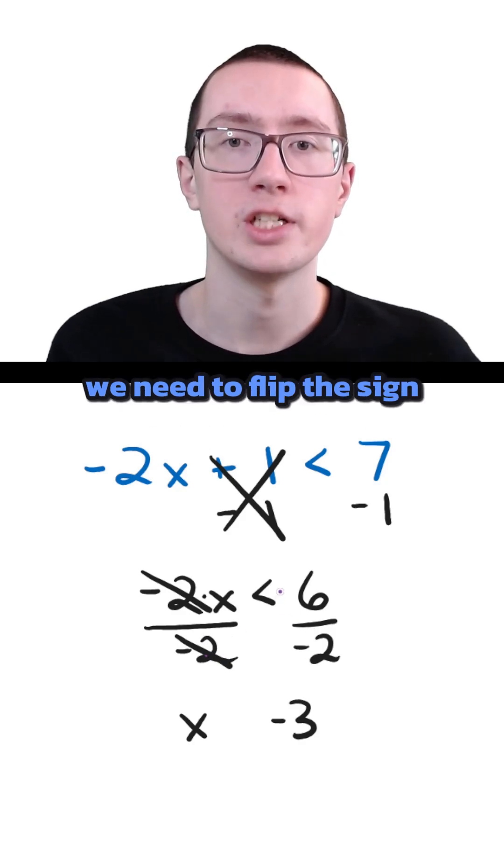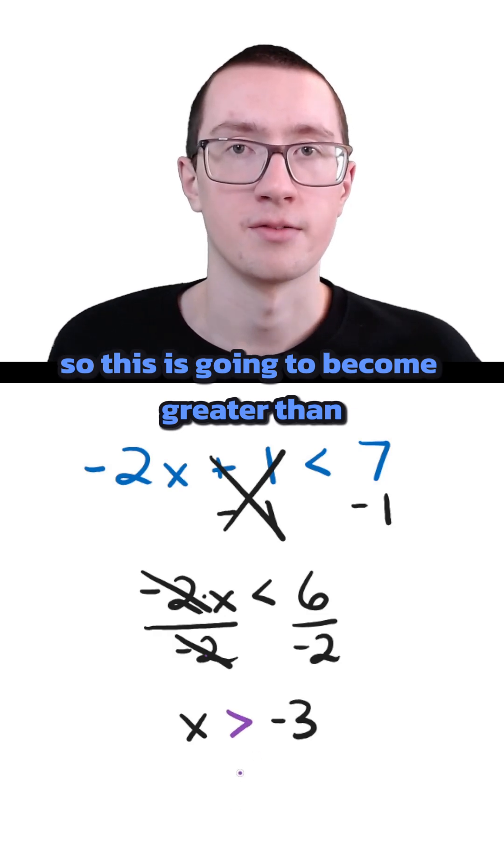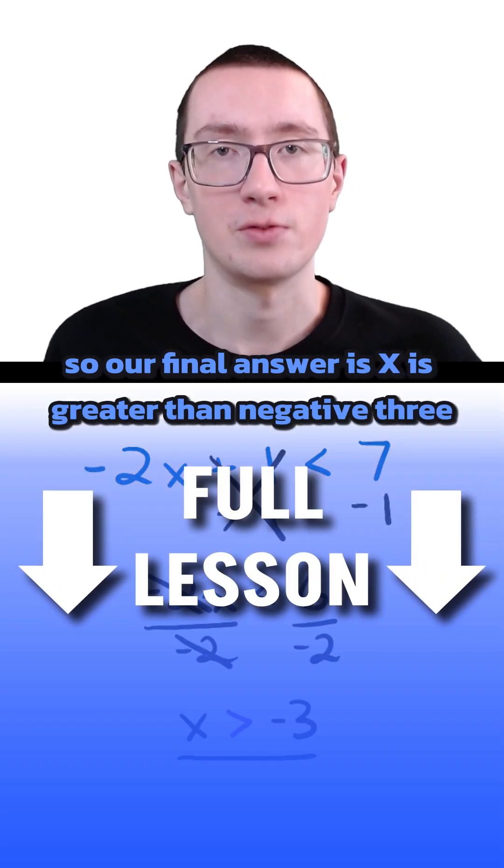When you divide by a negative number, we need to flip the sign. So this is going to become greater than. Our final answer is x is greater than negative 3.